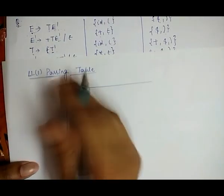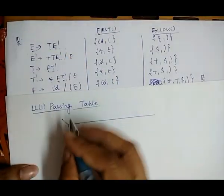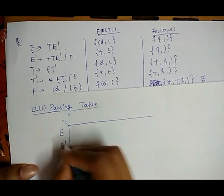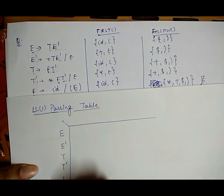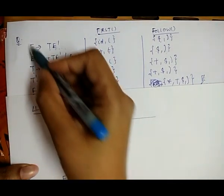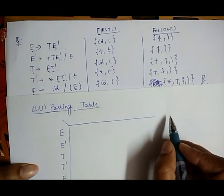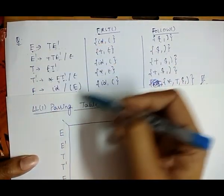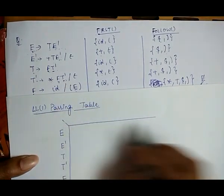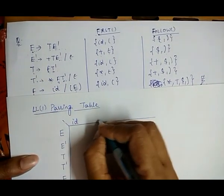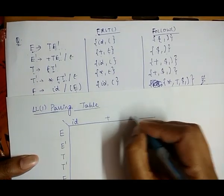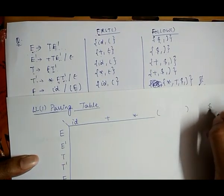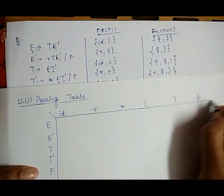The rows represent the non-terminals. For this particular grammar, the non-terminals are E, E', T, T', and F. For the columns, we identify the terminal values. For this question, the terminal values are: id, plus, star, open brace, close brace, and dollar.